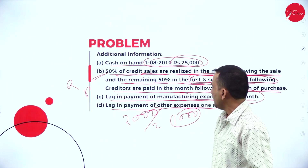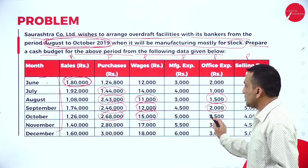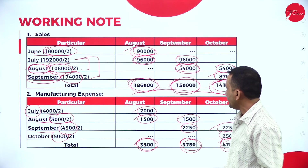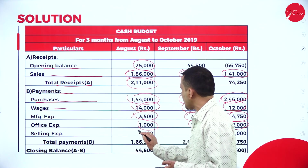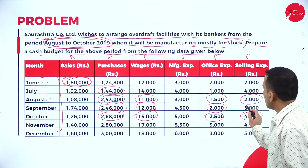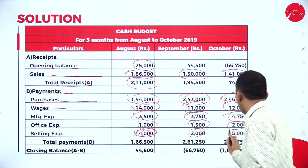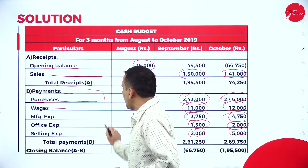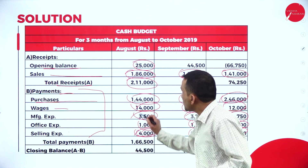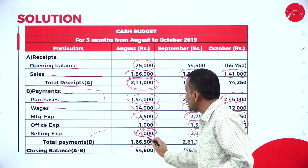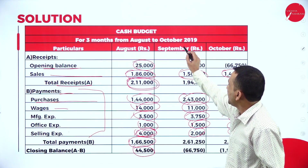Office expense: no adjustment, written directly — August 1,500; September 2,000; October 2,500. Selling expense: no adjustment — August 2,000; September 5,000; October 4,000. Once the payment side is totalled, August total payment is 1,66,500. Total receipts for August are 2,11,000 minus 1,66,500 = positive closing balance of 44,500, which carries forward as the opening balance for September.